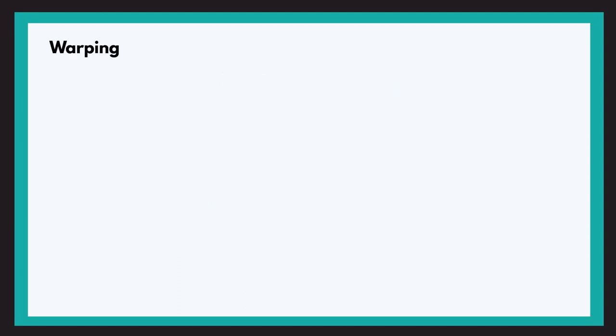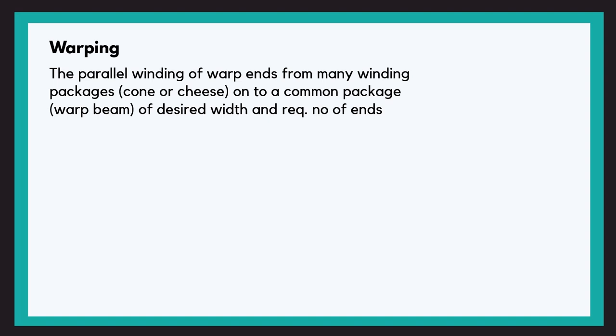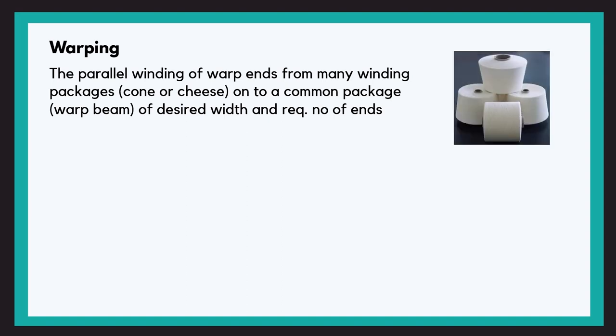From the winding process, we obtain cone or cheese packages. Now to produce a fabric, we'll have to prepare the warp yarns for weaving. So in the process of warping, a warp sheet is produced with parallel warp ends that are spaced equally.